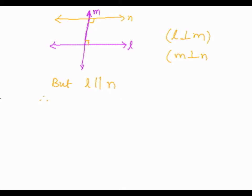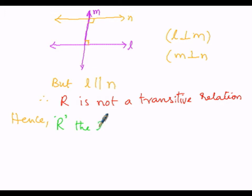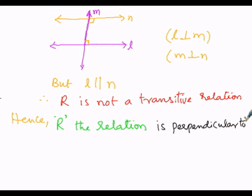Therefore, R is not a transitive relation. It is confirmed that the relation 'is perpendicular to' is not a transitive relation.